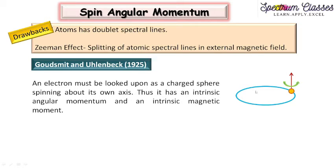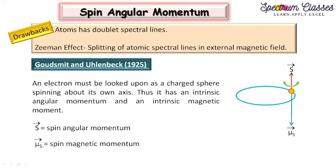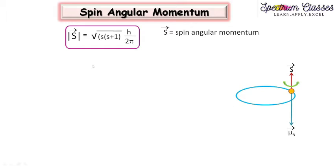It is the electron which is spinning about its own axis, thus it has an intrinsic angular momentum vector S, and therefore it has an intrinsic magnetic moment, also represented by μs, known as the spin magnetic moment. This spin angular momentum has its magnitude — and why total? Because if we have more than one unpaired electron, it will be the sum of all the spins present in the atom. So S = √(s(s+1)) · ℏ, where ℏ = h/2π.